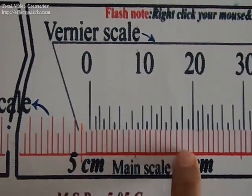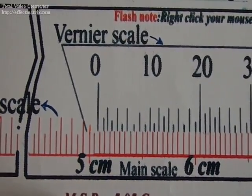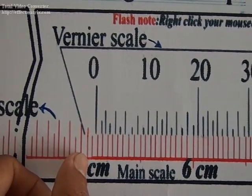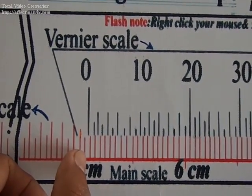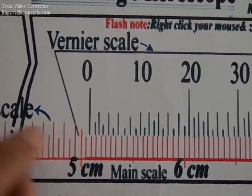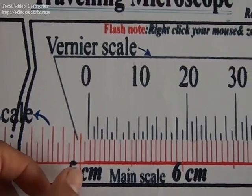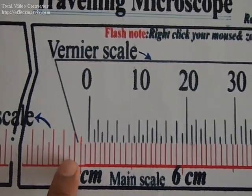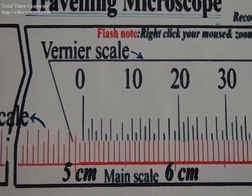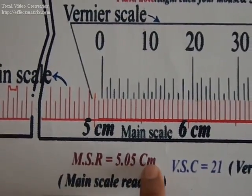In this case, the vernier scale zero has crossed five centimeters and one division. One division is 0.05 centimeter. It has already crossed five centimeters, so the main scale reading is 5.05 centimeters.